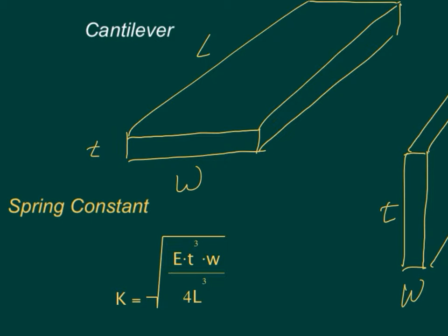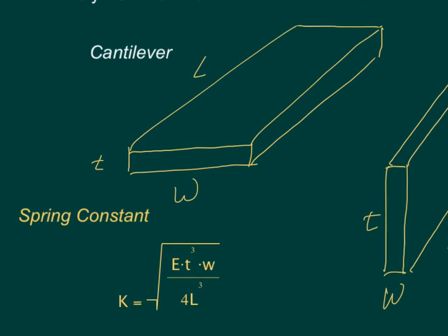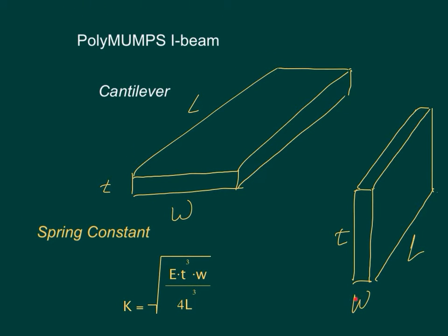So if we rotate the cantilever 90 degrees, then you can see it won't oscillate up and down anymore because that's the thicker part and the thickness is on the top of the fraction within the square root sign.